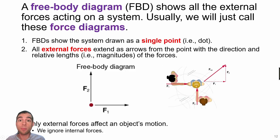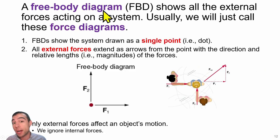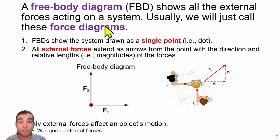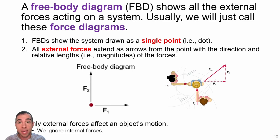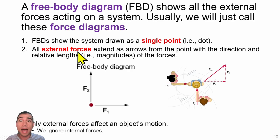Our diagrammatic model for this unit is called a free body diagram, or force diagram. To draw a force diagram, draw your system as a single point — representing which object is actually feeling the forces — placed at where the center of mass is located.